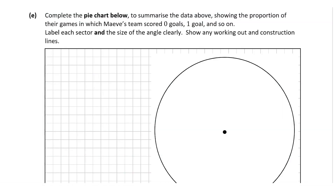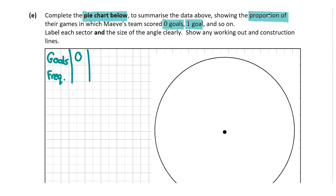Question E is the most challenging but we'll go through it step by step. We're asked to complete a pie chart summarising the data, showing the proportion of games in which Maeve's team scored zero goals, one goal, and so on, labelling each sector and angle clearly. I'm going to draw a table with goals and frequency. The goal values are zero, one, two, three, and seven.